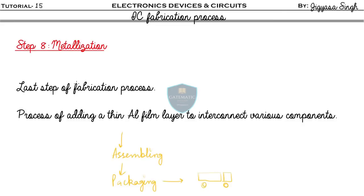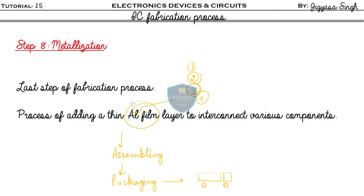You may ask why we use aluminum specifically. Number one, it is a good conductor. Number two, it has good mechanical bonds with silicon. Number three, it forms a low-resistance contact. Number four, it can be applied and patterned with a single deposition, requiring only a single etching process — so it's easy and it is the best choice.